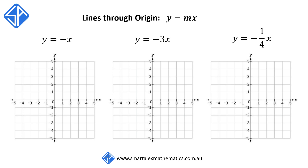In the following examples, we now have negative values of m. Our first example is y is equal to negative x, which simply means negative 1x. So we can write m as equal to negative 1, or negative 1 over plus 1, so Δy over Δx equals negative 1 over plus 1.